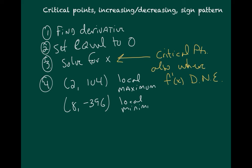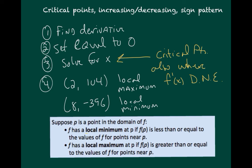Negative 2 comma 104 was a local maximum and 8 comma negative 396 was a local minimum. A local minimum occurs at an x value where the y value is less than or equal to the nearby values — like the bottom of a valley or trough. A local maximum is a y value that is larger than y values in the area — the top of a hill. We're going to meet global maximums and global minimums, but not right now.